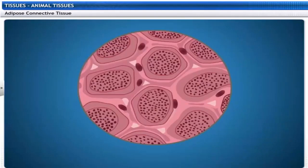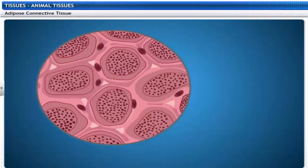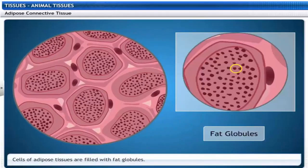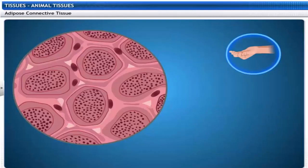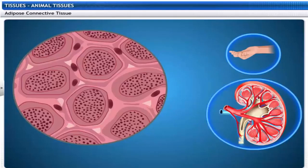Here is a look at the adipose connective tissue. Cells of this tissue are filled with fat globules. It is found below the skin and around internal organs like kidneys and acts as an insulator.